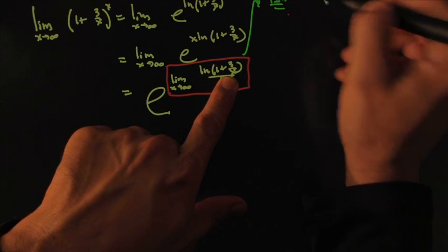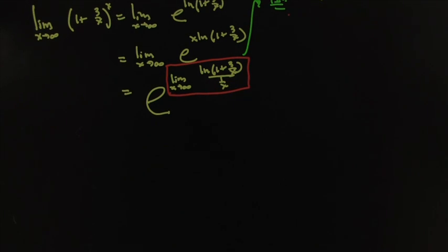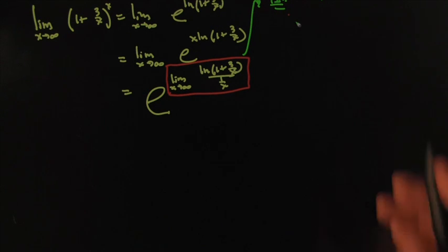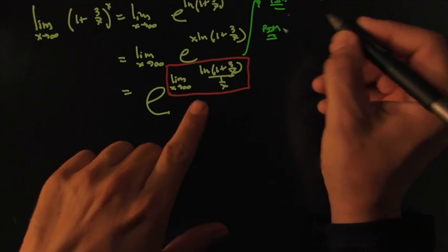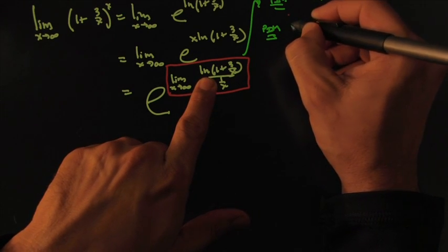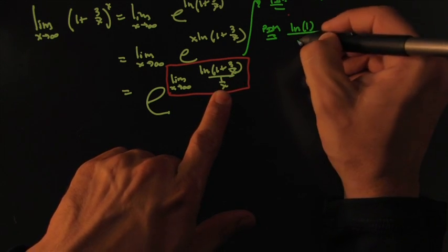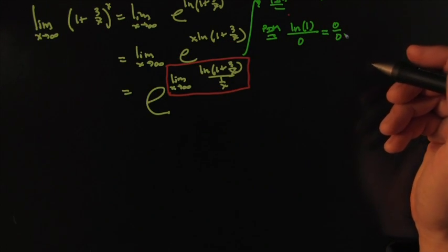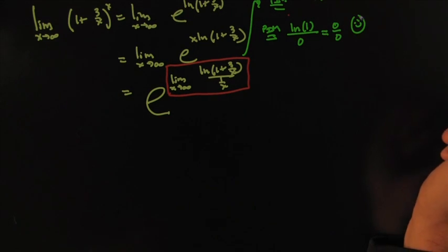If I try the plug-in method, x is going towards infinity, so I've got infinity times ln of 1. I'll write it here — the plug-in method gives me: x going towards infinity puts infinity there, and that gives me ln(1) all over x going towards infinity, which gives me 0. So this gives me 0 over 0 — a famous indeterminate form. Not only famous but the kind that we like, because you can use L'Hôpital on that.